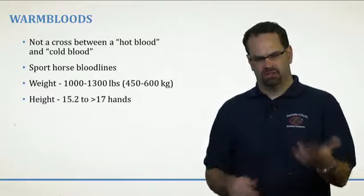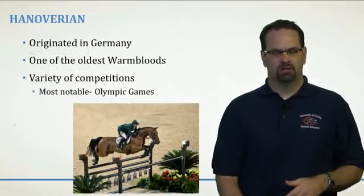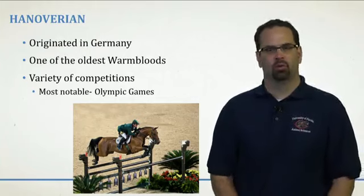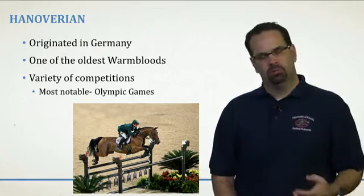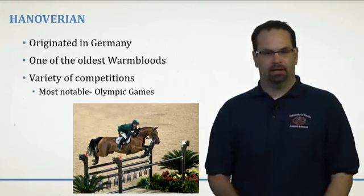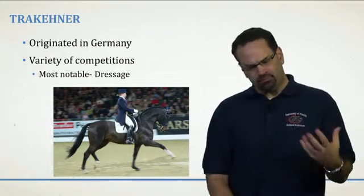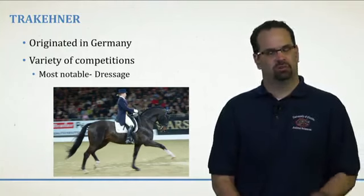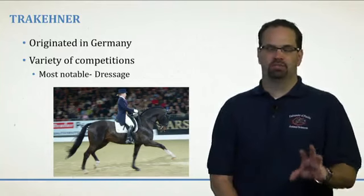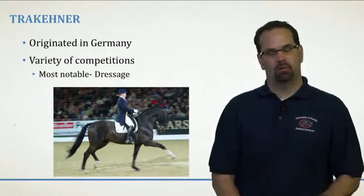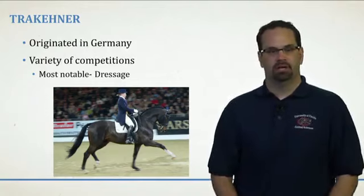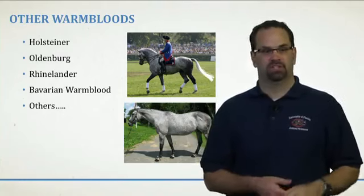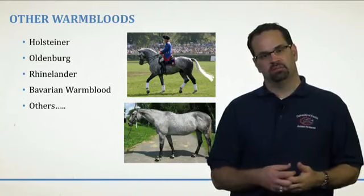Warm bloods are really known as the sport horse lines. They're typically the size of our light horses or our larger light horses. The first one is the Hanoverian — one of the most popular sport horses in the world. You can see them in the Olympics; they're just really beautiful, majestic animals seen in competitions all the time. Then there's the Trakehner, which is typically known for dressage. If you've never seen dressage, please Google it — it's amazing what some of these riders can do. The warm bloods show a strong European influence, and that's where a lot of them originated.